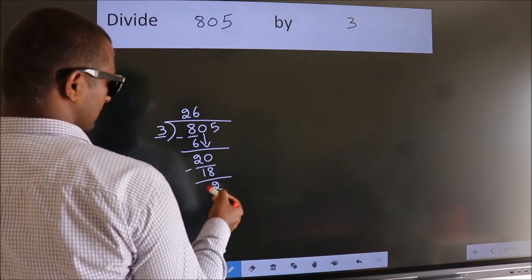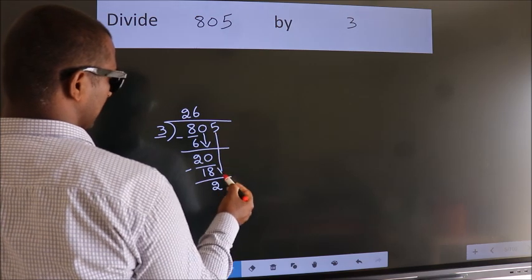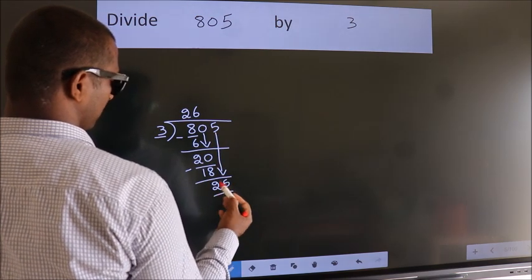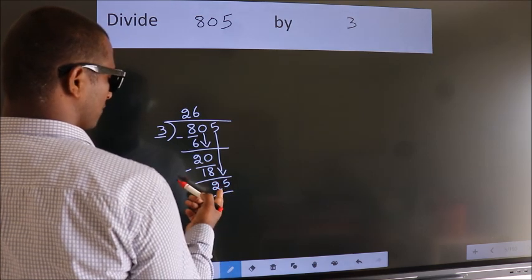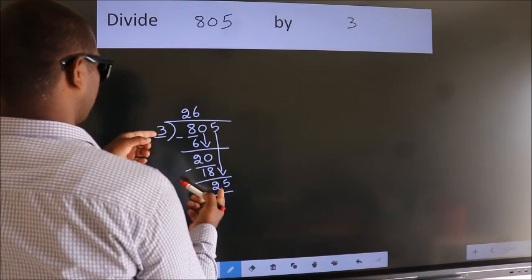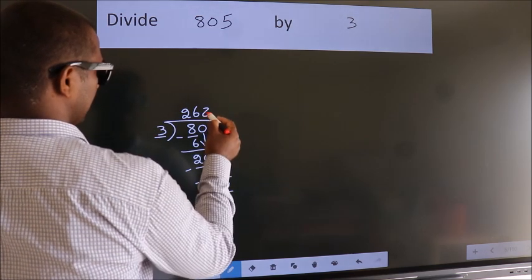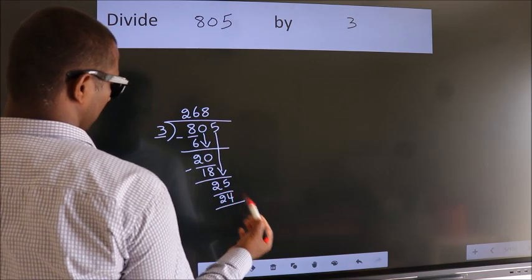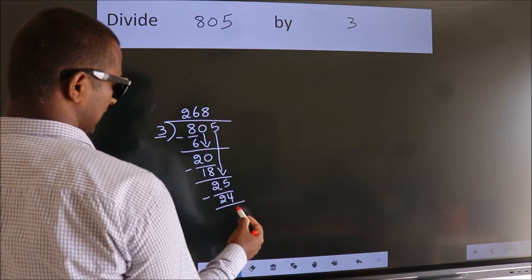After this, bring down the beside number. So 5 down, so 25. A number close to 25 in the 3 table is 3 times 8 is 24. Now we subtract. We get 1.